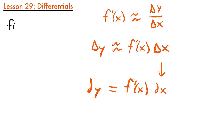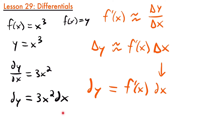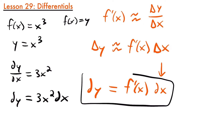Let me show you what I mean. If we have the function f of x equals x cubed, that's the same as writing y equals x cubed. If we take the derivative, we have that dy dx is equal to 3x squared — we just used the power rule. And if we multiply both sides by dx, the differential of x, we get that dy is equal to 3x squared dx. So the differential of y is equal to the derivative of the function times dx. This is the basic concept and definition of differentials: the differential dy is equal to the derivative of your function times dx.